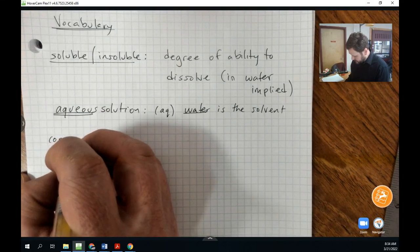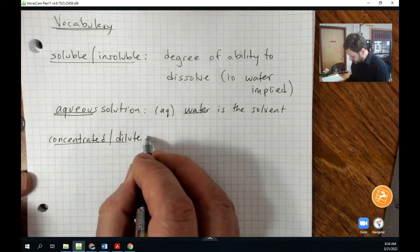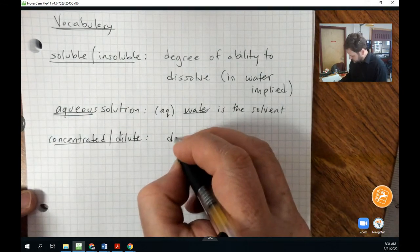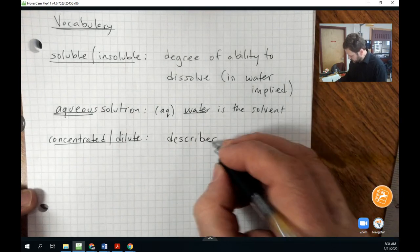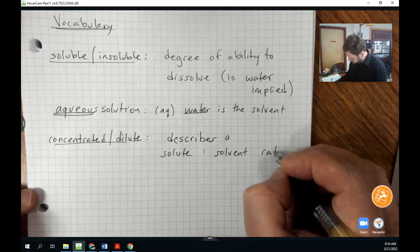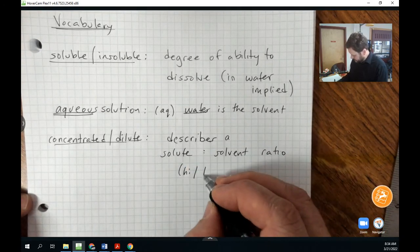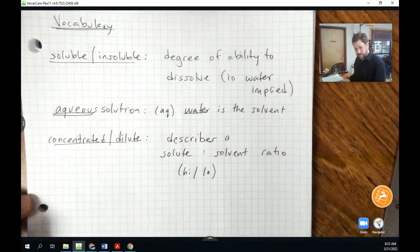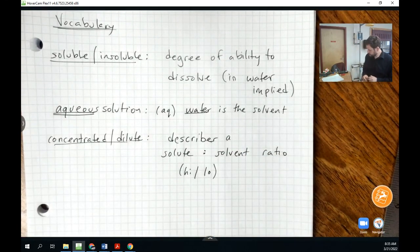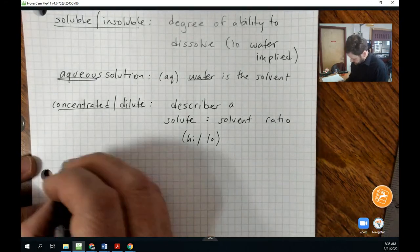Let's talk about another important pair of words, concentrated versus dilute. Again, these are not new vocabulary words probably, but we want to understand how chemists are going to think about this. This pair of words describes a solute to solvent ratio, where high would mean concentrated, and low would mean dilute.